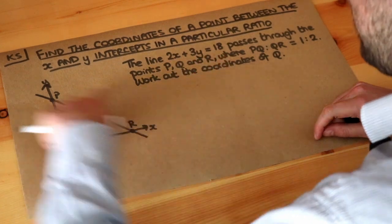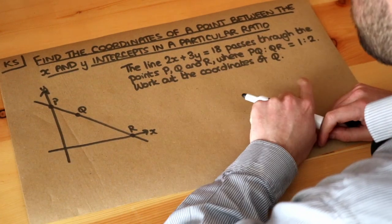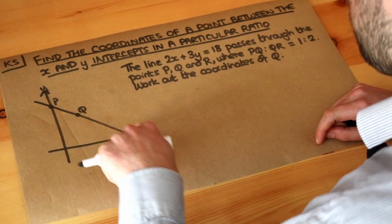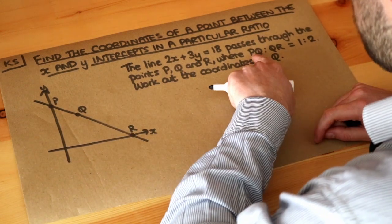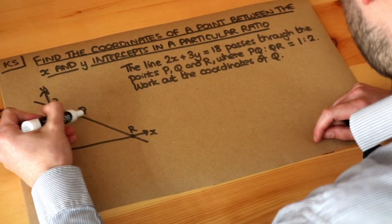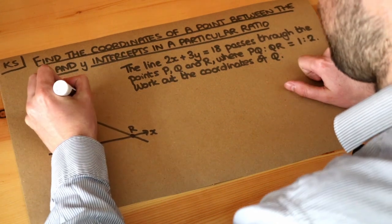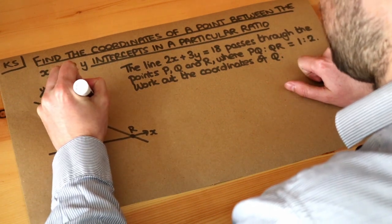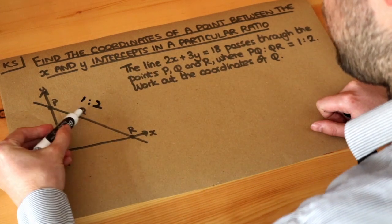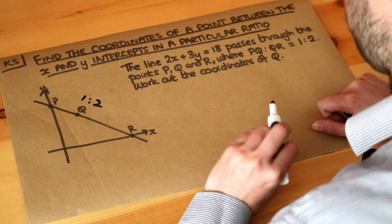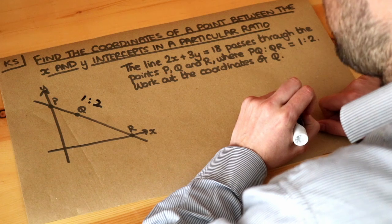The line 2x plus 3y equals 18, which is this line here, passes through the points P, Q and R. And it's telling us the ratio of PQ to QR is 1 to 2. So I'm going to write that on the diagram. I like to write ratios on diagrams. So PQ to QR is 1 to 2. Work out the coordinates of Q.